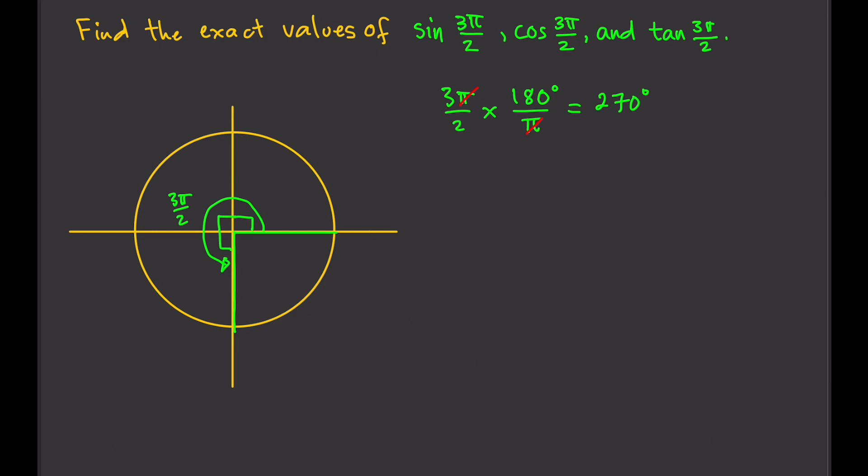And again, just like before, we're going to look at the intersection point of the angle and the circle itself. Now in the previous examples, we needed to construct a right triangle to find the coordinates. In this case, we don't have to because we know exactly where the point is.